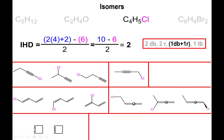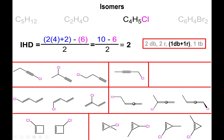Now for one double bond and one ring: with four carbons, first draw a four-membered ring (a square) with a double bond. The chlorine can be on a doubly-bonded carbon or on a singly-bonded carbon. You can also draw a three-membered ring with a double bond, giving more possibilities — the chlorine can be on the non-doubly-bonded carbon or on one of the doubly-bonded carbons.